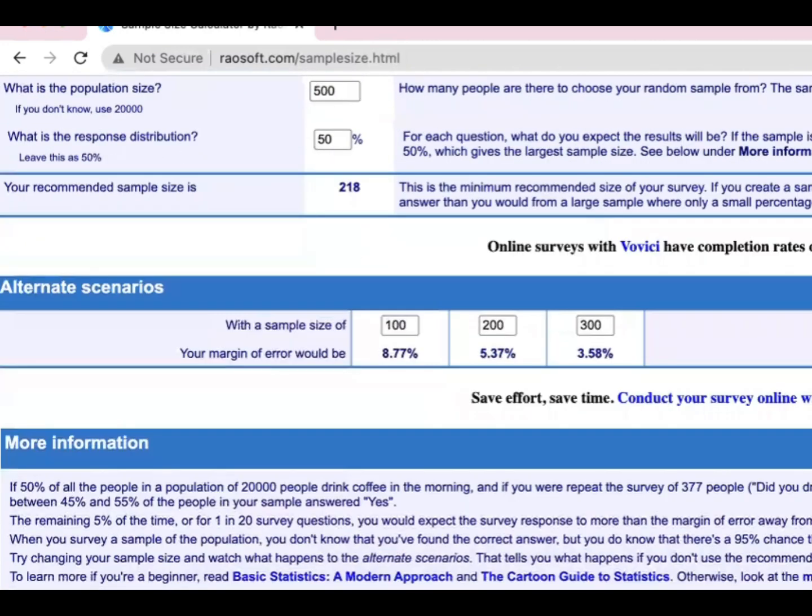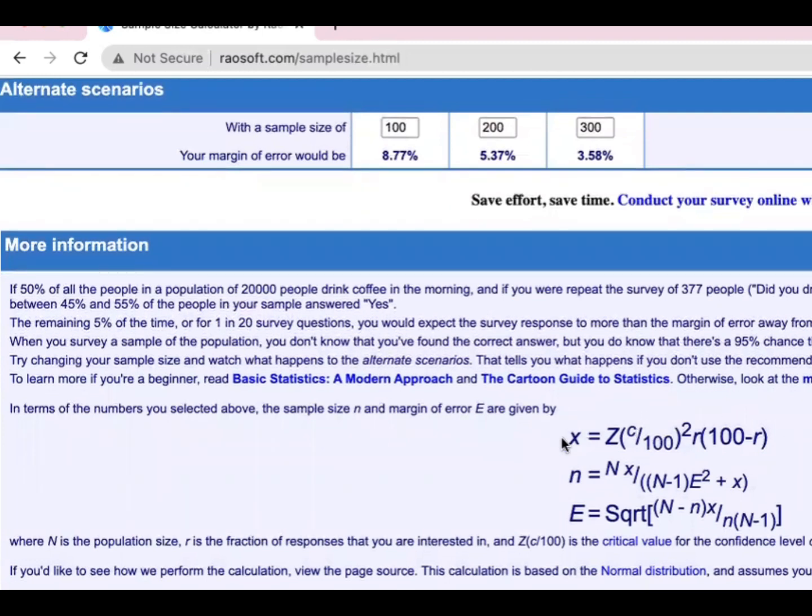And then if you need the formula for your statistical treatment, you can use this formula that the Raosoft calculator uses to solve for the sample size. So X, the sample size, is equal to this standard score, the critical value Z over 100 squared times R, the fraction of responses that you are interested in, times the quantity 100 minus R. You can use either the first or the second and the third formula if you need this formula.